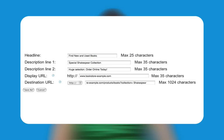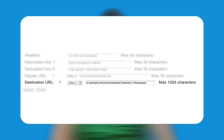Your destination URL is the web page that users land on when they click on your ad. It is also your display URL. In the bookstore example shown here, the destination URL leads users to a page specific to a Shakespeare collection that is being advertised, rather than to the home page with multiple products. Your destination URL can have up to 1,024 characters and will not appear in your ad.